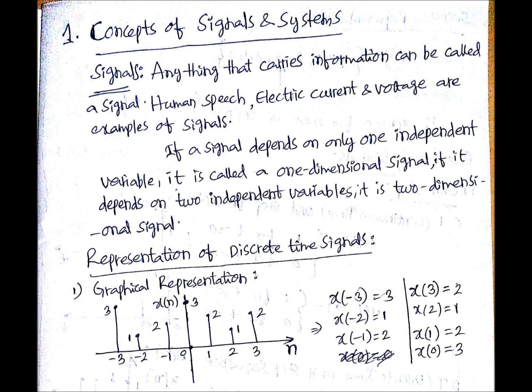Human speech, electric current, and voltage are some examples. If a signal depends on only one independent variable, it is called a one-dimensional signal. If it depends on two independent variables, it is a two-dimensional signal.